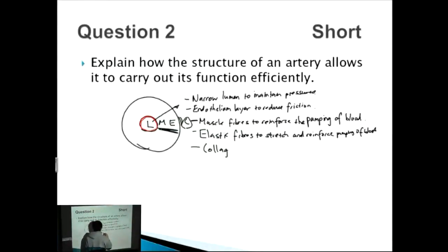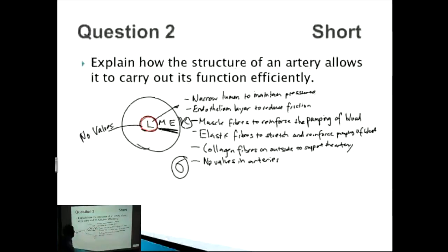How about the collagen on the outside? The collagen fibers on the outside are there to support the artery. We have this framework where we draw the diagram that reminds us what to talk about. We've already got five points here which should be enough for maximum marks, but we can add something else. Remember that there are no valves in arteries, and the reason why is because it's a high pressure system so you don't need them. If we count the number of points that we have, we've got six points here so that should give us a maximum mark.